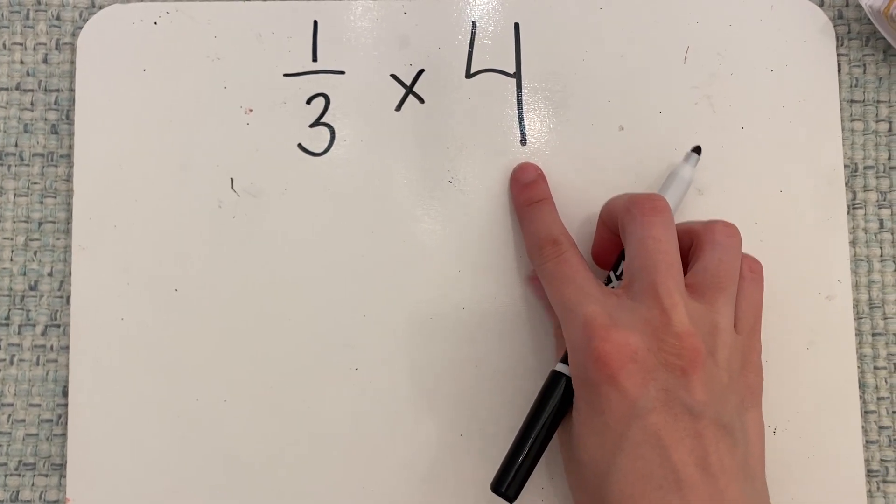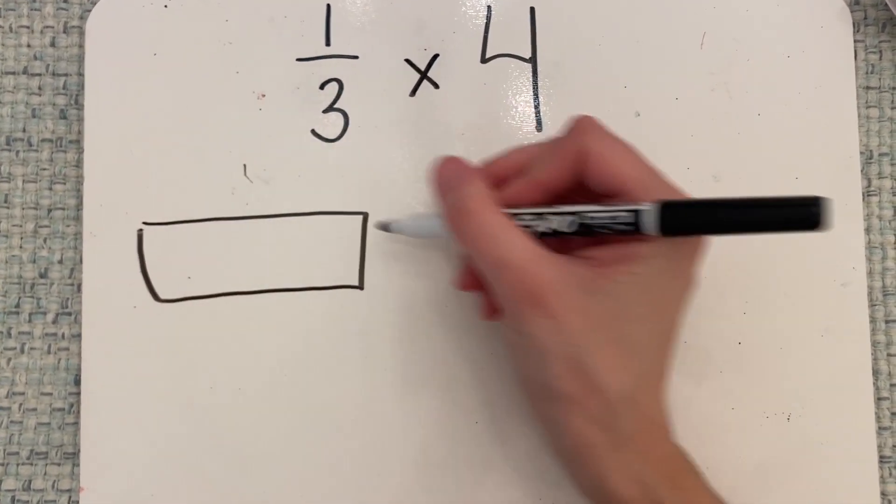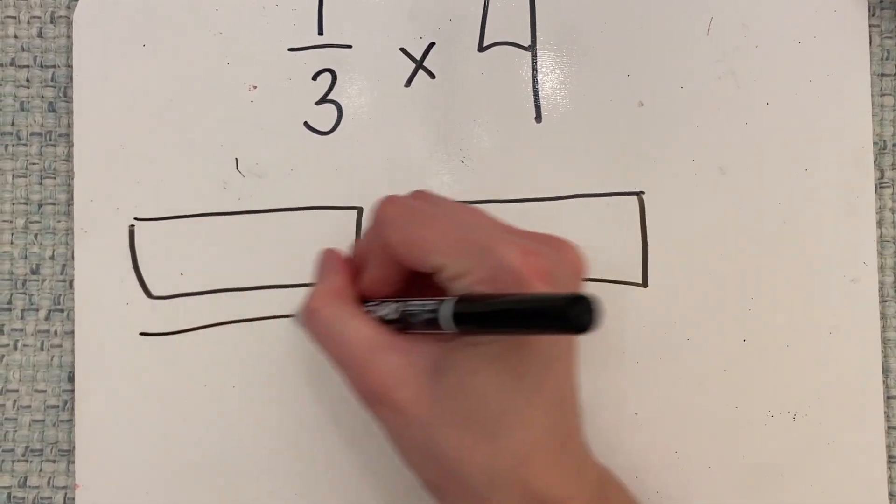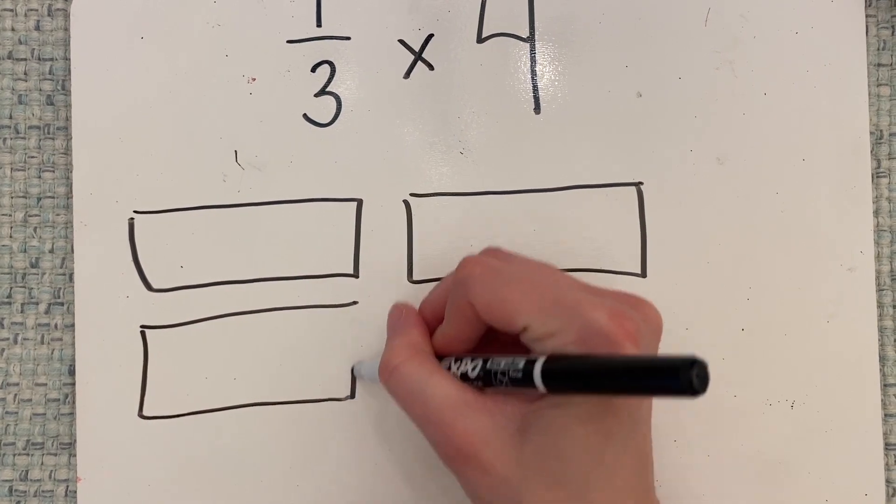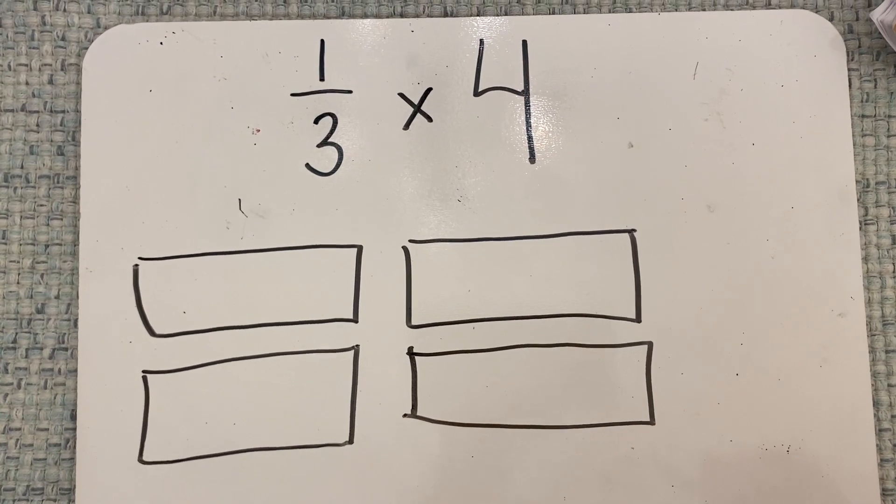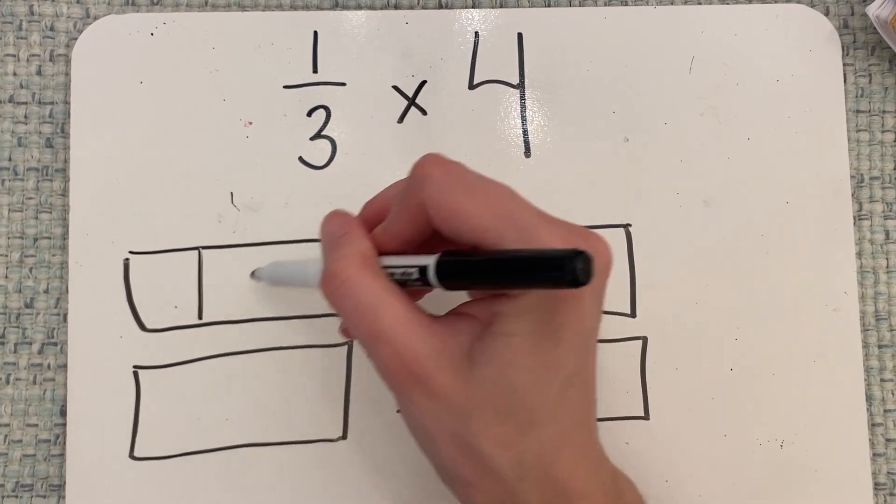So we have four wholes that we're going to find one-third of. So we're going to make four boxes, just like you would have before. You model your whole number. And each of these represents one whole. Okay, so there's my four boxes. I'm going to split each box into thirds to represent my fraction.